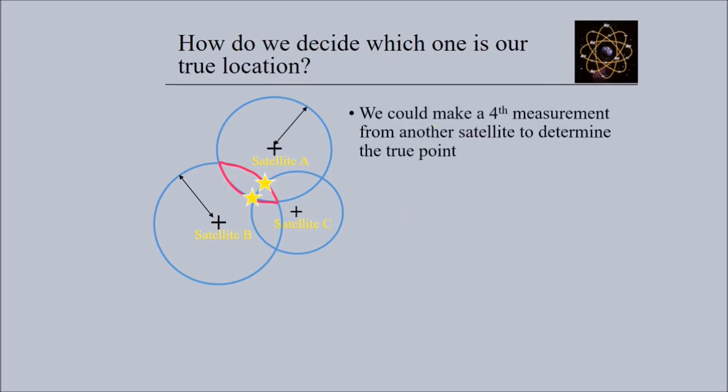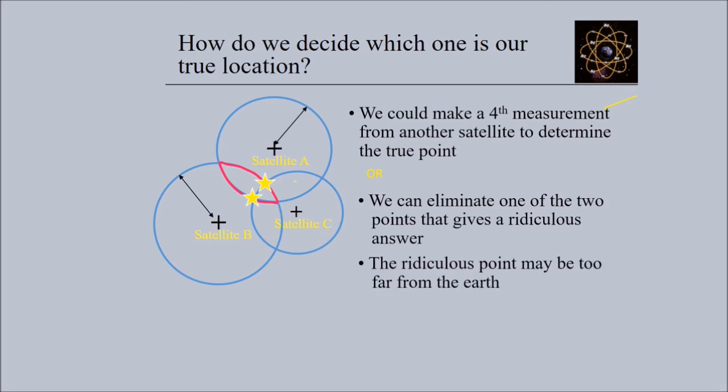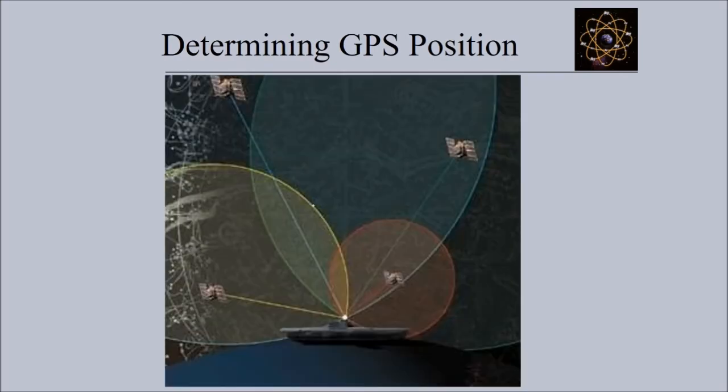By ranging from three satellites we can narrow down our position to just two points in space. Now we need one more measurement from another satellite to determine the true point. GPS receivers use four satellites to precisely locate our position - this is our exact position.